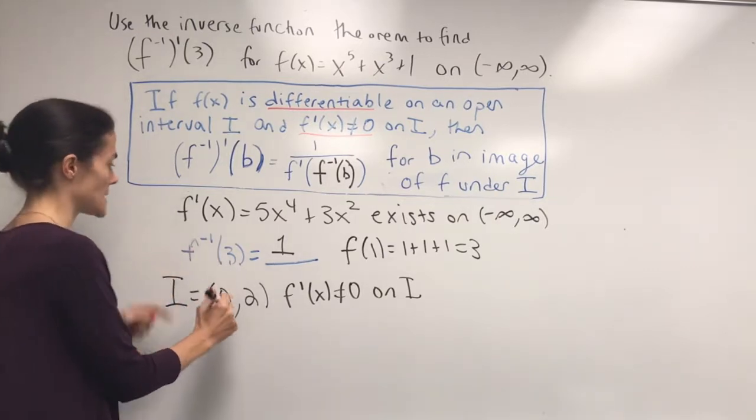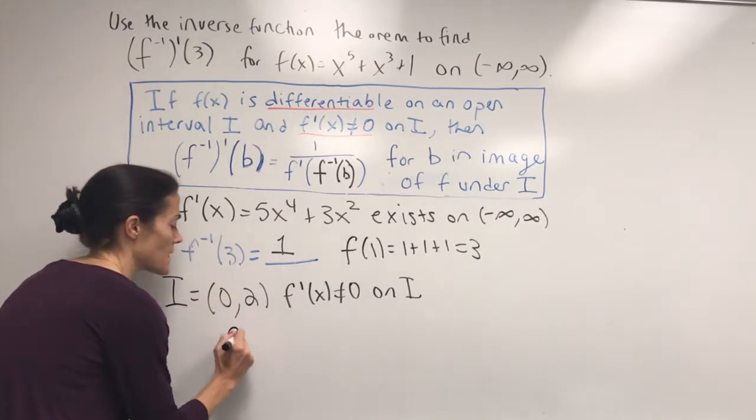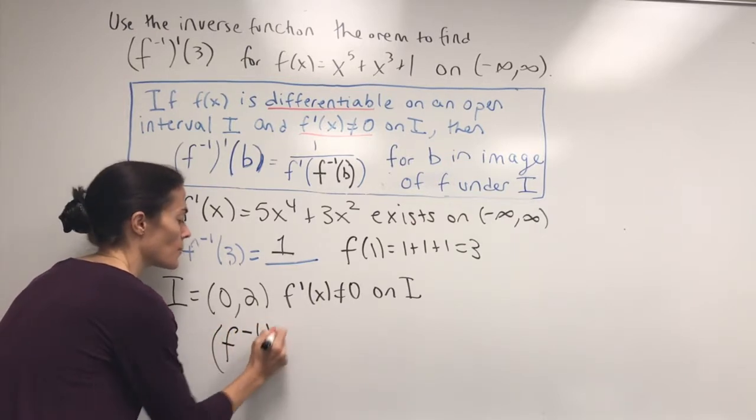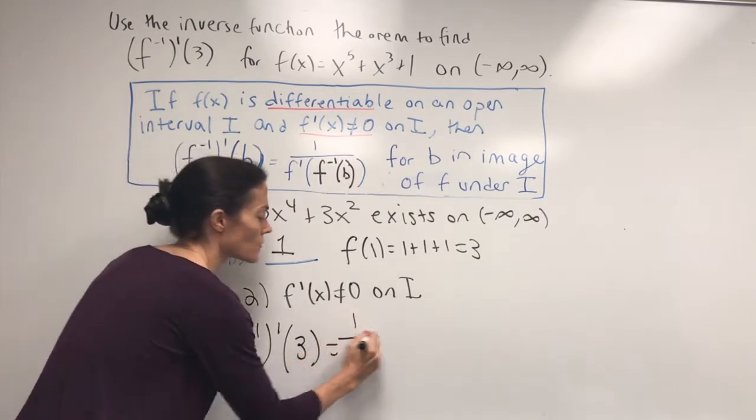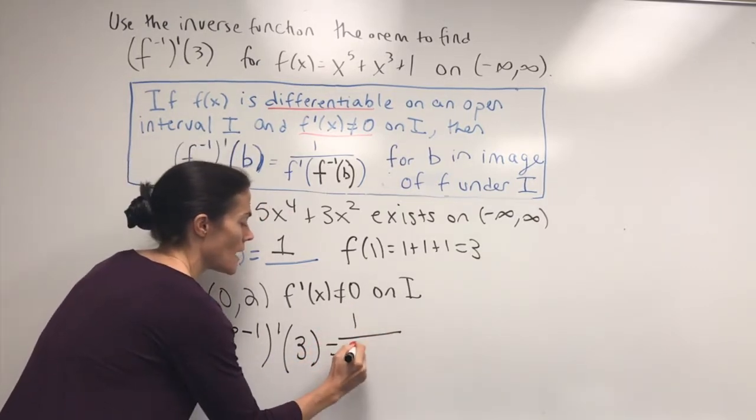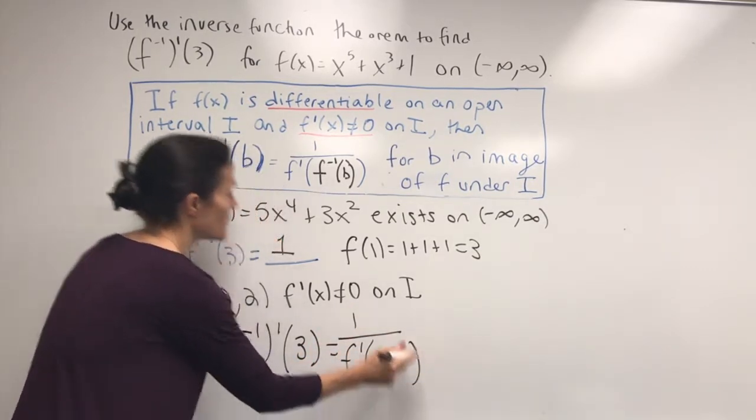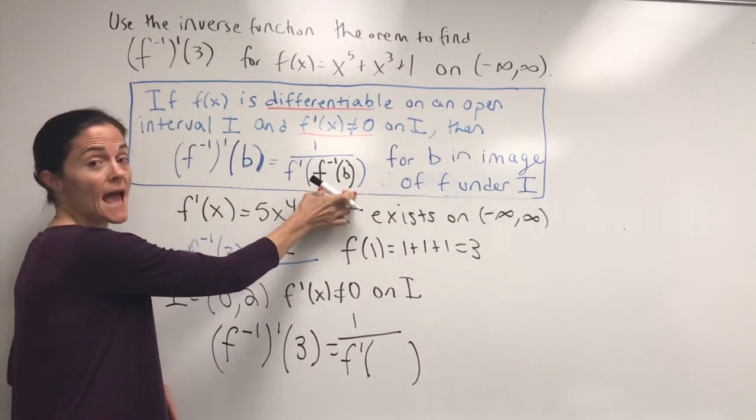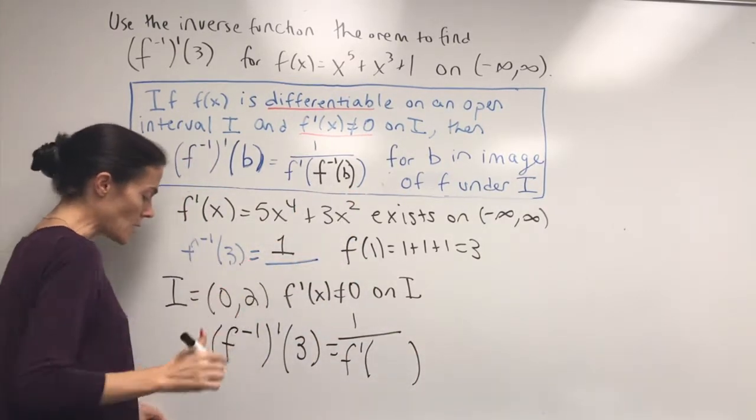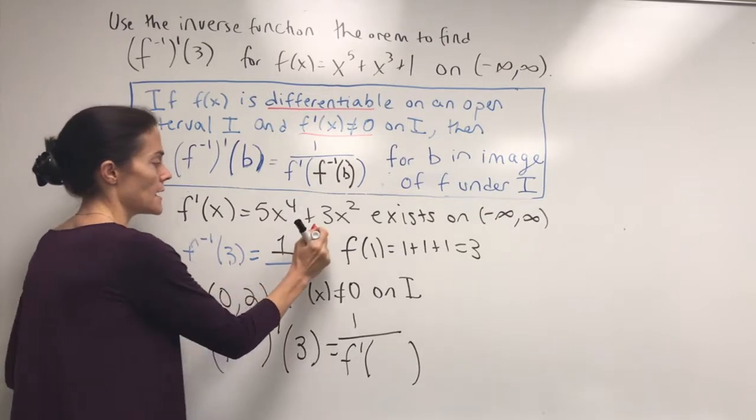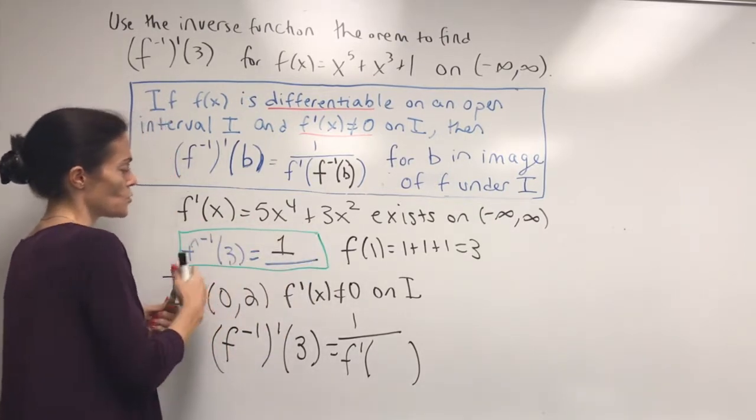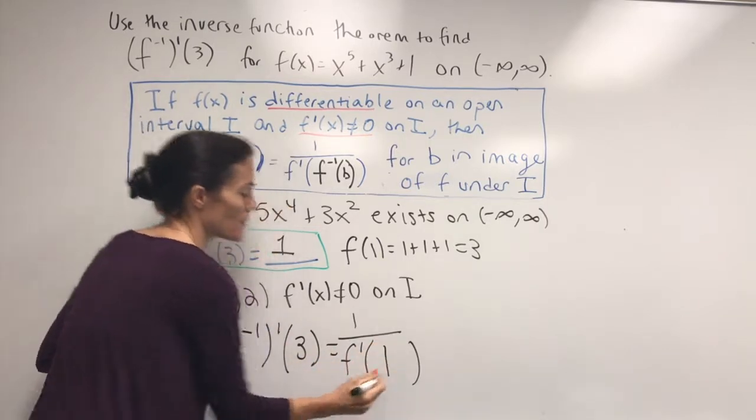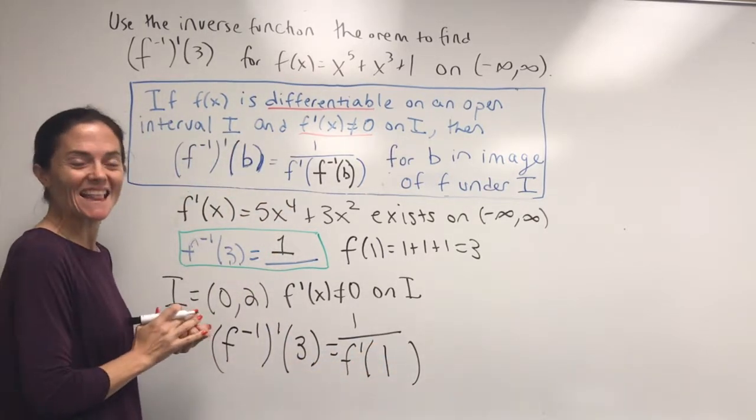And the theorem says that if you want the inverse prime at 3, it will be 1 over f prime of... and now we put in f inverse of 3, right? We calculated this already. It is right here. So we do 1 over f prime of 1 like this.